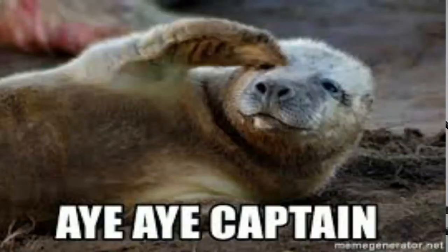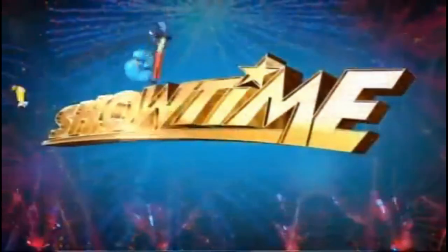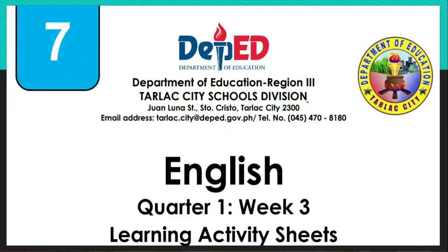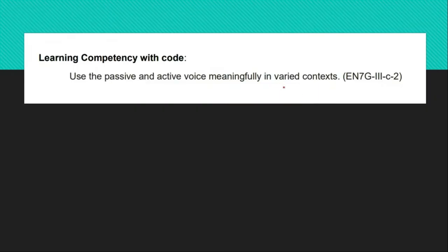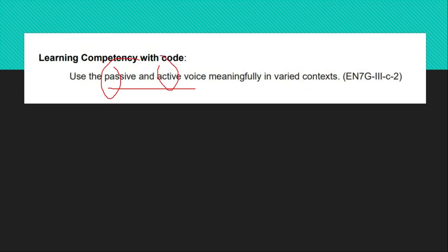I can't hear you. Are you ready to have our lesson now? Well then, let's begin. Let us start our lesson for this week. English 7, Quarter 1, Week 3. For this week, our learning competency is: Use the passive and active voice meaningfully in varied contexts. The important terms we have to understand are passive and active voice.